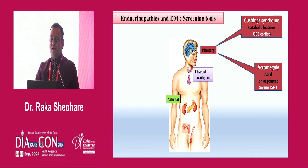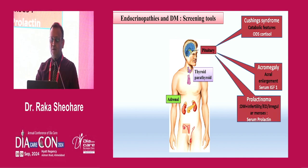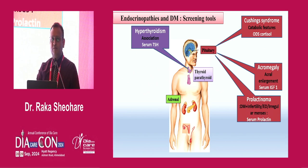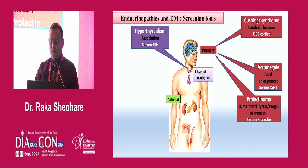For acromegaly and acral enlargement, use serum IGF-1. For prolactinoma: a diabetic patient presenting with infertility, erectile dysfunction, or irregular menses — go for serum prolactin. For hyperthyroidism, use serum TSH, along with other clinical clues. These are the key screening tests to guide investigation.